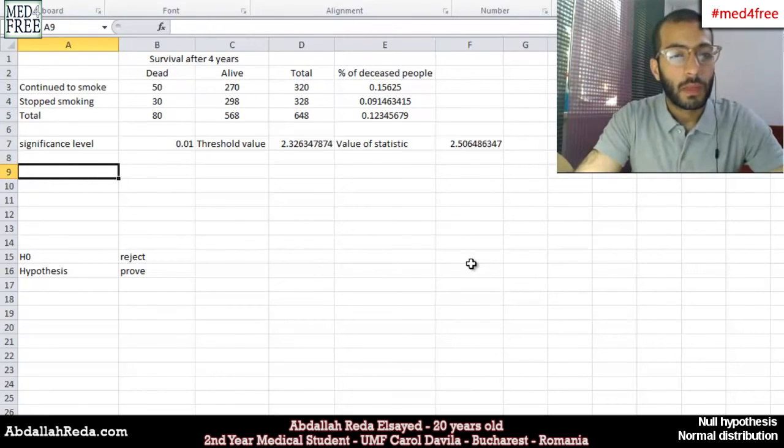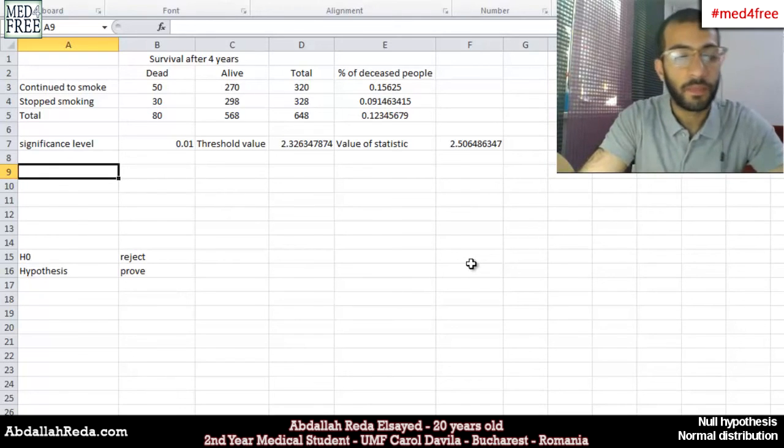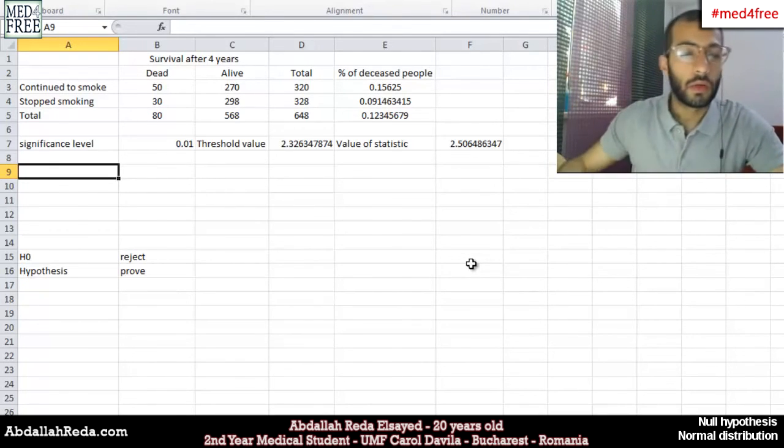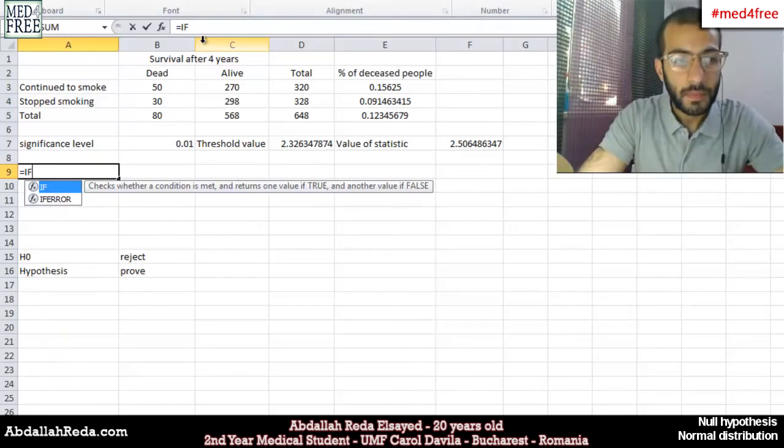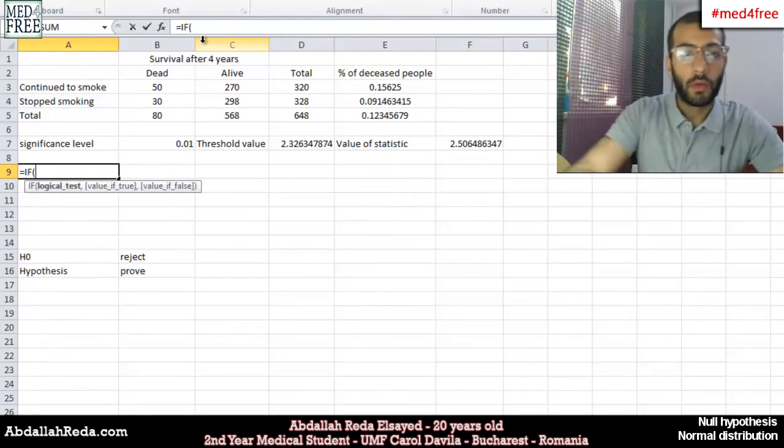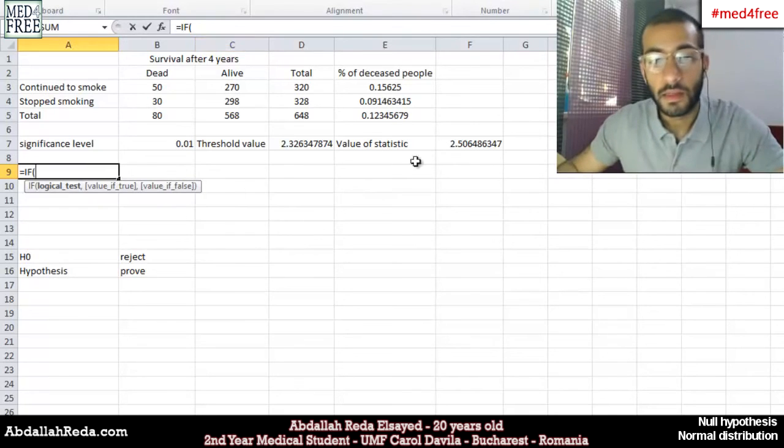Now we tell Excel what to do. We want Excel to tell us if the results were significant or insignificant. So we write equal IF. We open a bracket. So we tell Excel if this value, and we select it.